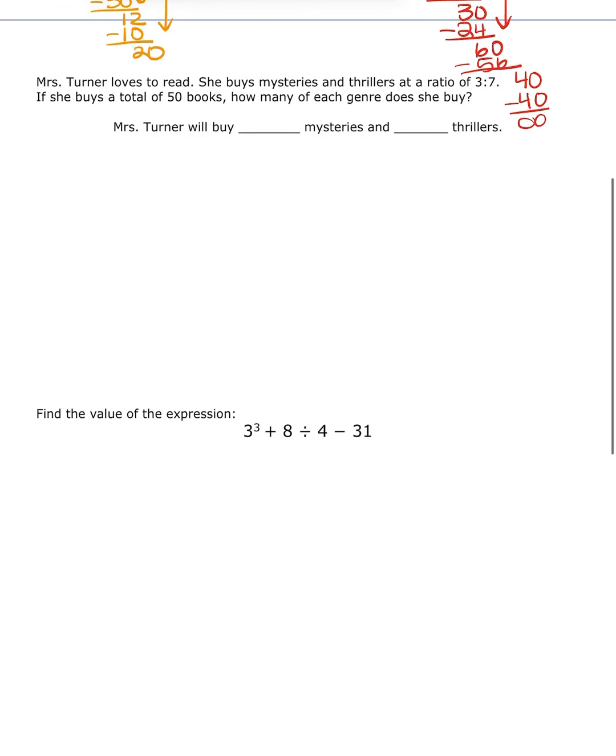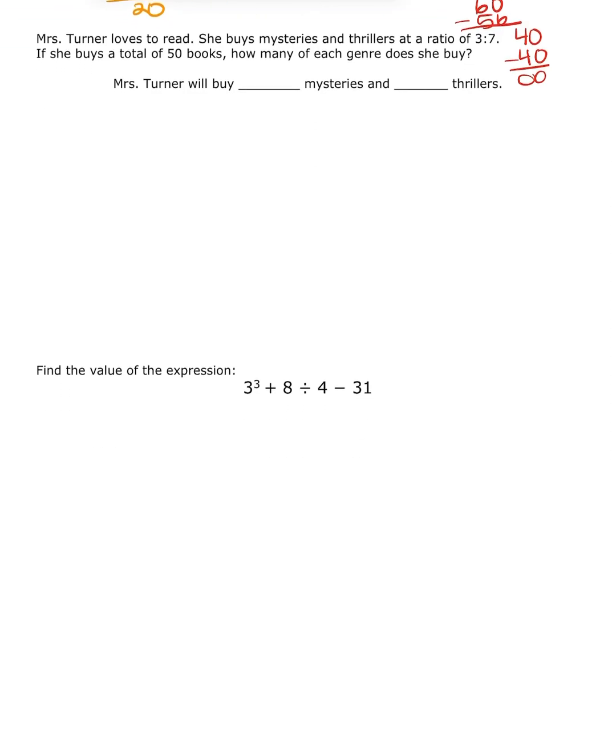All right. Let's skip down here to number 3. Number 3 says, Ms. Turner loves to read. She buys mysteries and thrillers at a ratio of 3 to 7. If she buys a total of 50 books, how many of each genre does she buy? So, we have our ratios again. So, I'm going to write them down. Remember, labels, labels, labels. That's what matters. So, we have mystery to thriller. And it says it's 3 to 7. So, I'm going to put mystery for M. Thriller, I'm going to put TH. And we said 3 mystery to 7 thriller. And it does say our lovely keyword total. And when it says total, we know we need to add our two numbers to find a total.